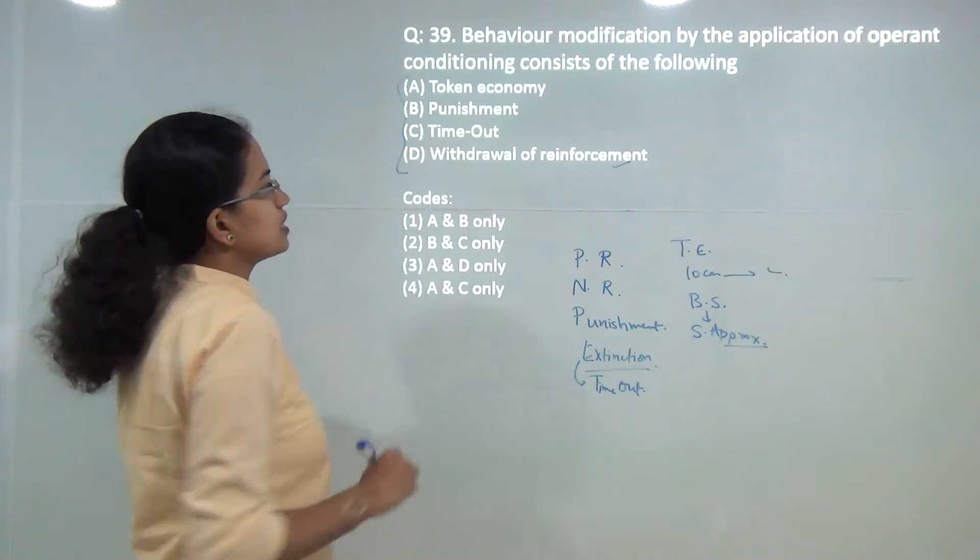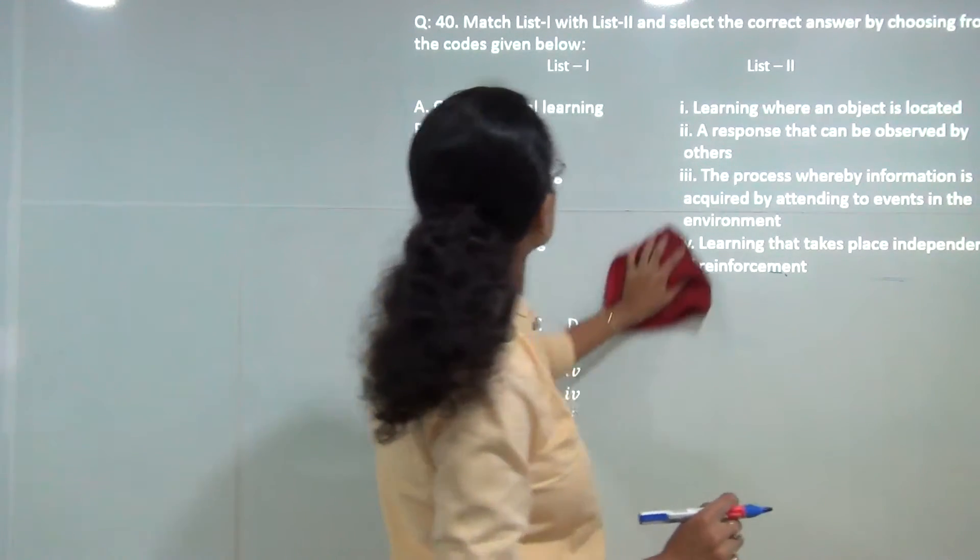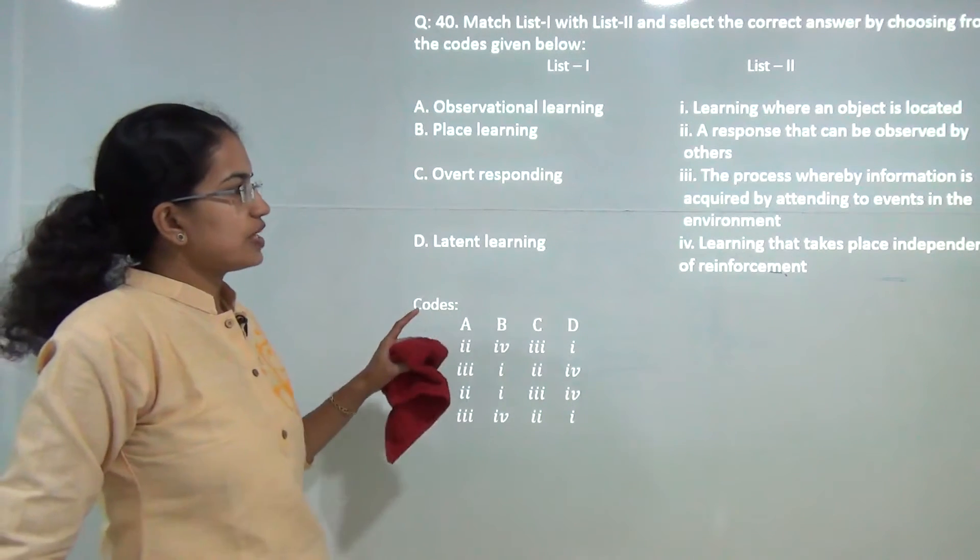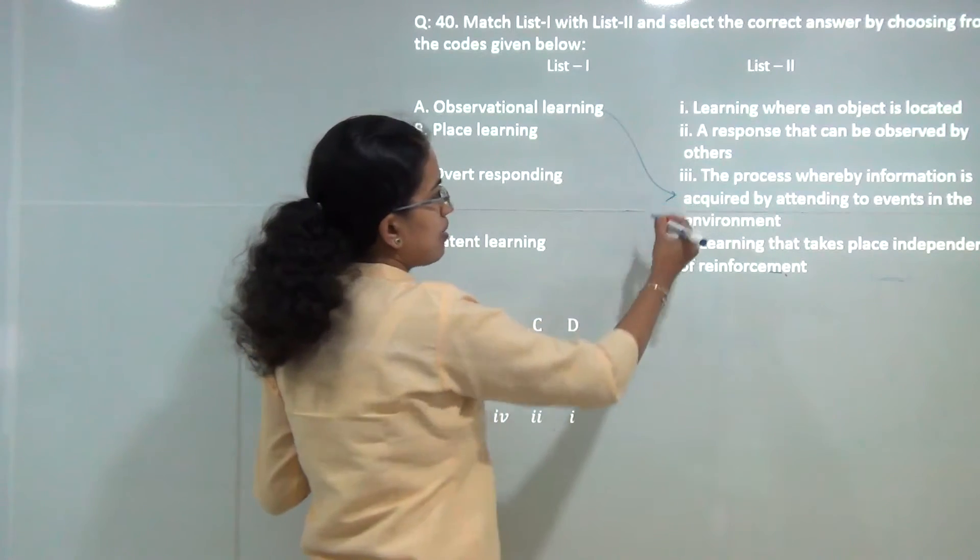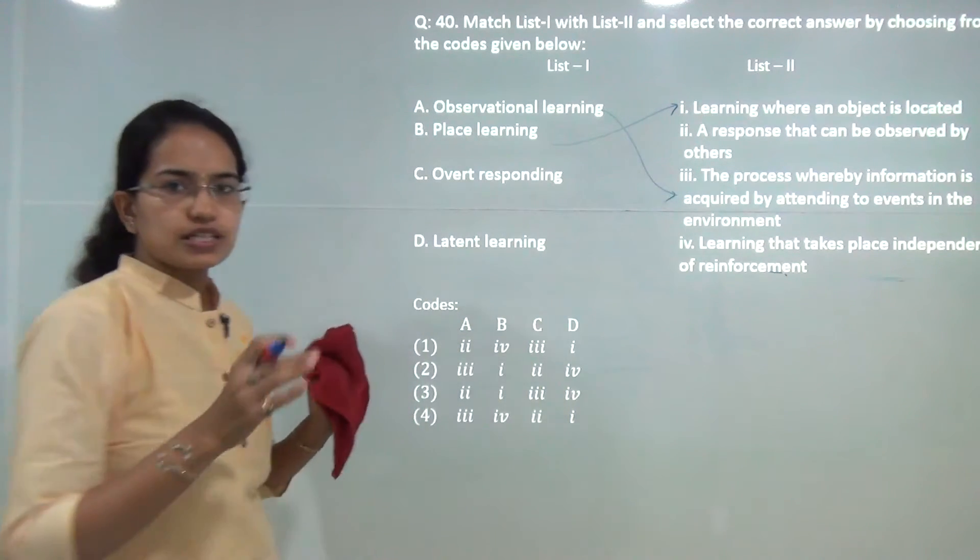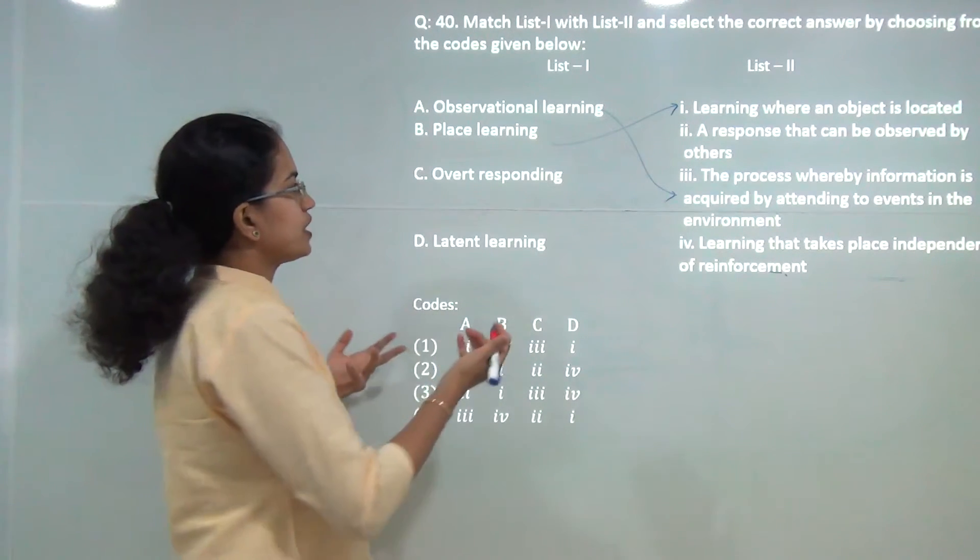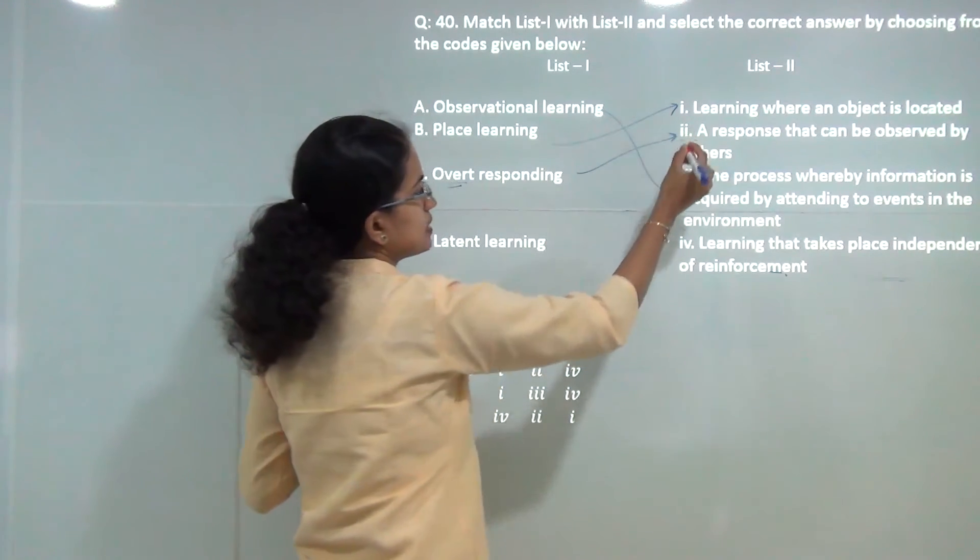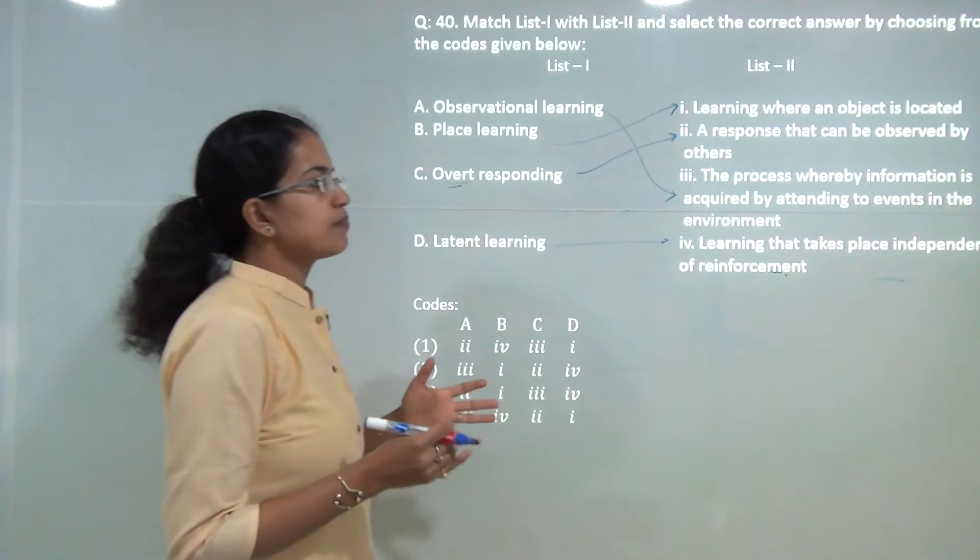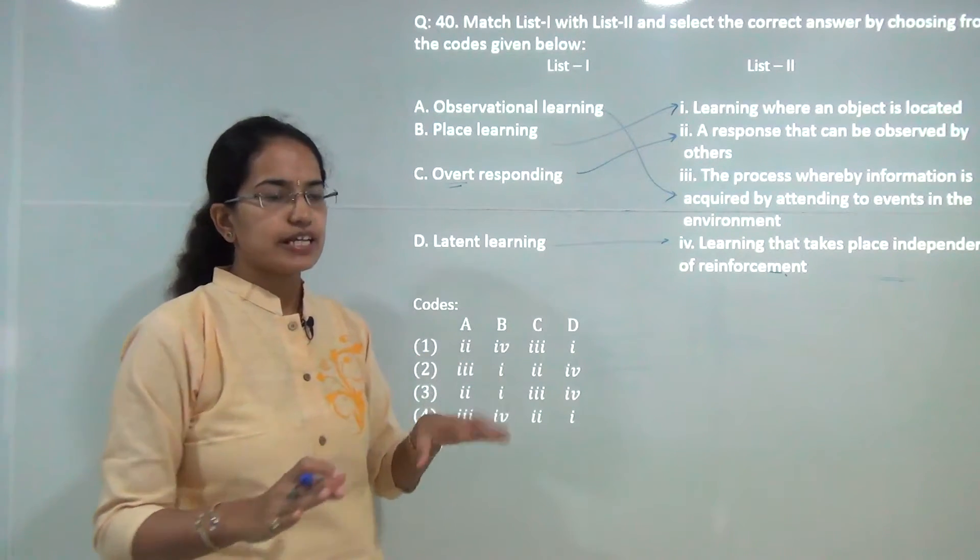You have to match the type of learning with the correct definition. Observational learning is the process where information is acquired by attending the events that happen in the environment. Place learning is learning where an object is located. Overt and covert: overt is what is observed by others and covert is what you believe. And finally you have latent learning: learning that takes place independent of the reinforcement. So it is latent or hidden and it is not modified by the reinforcements that are given.